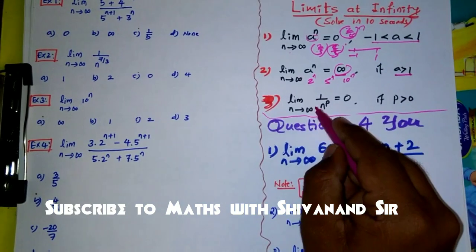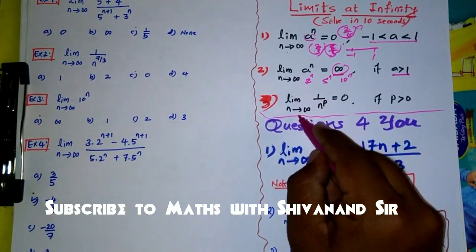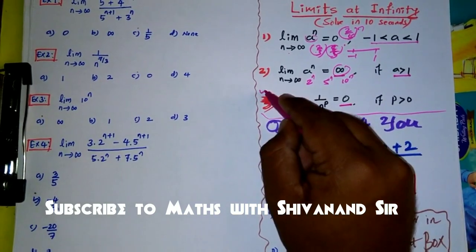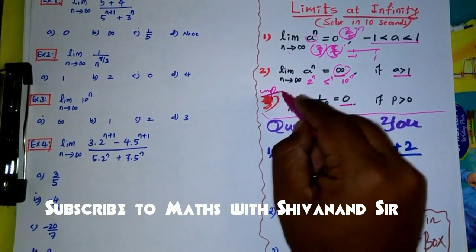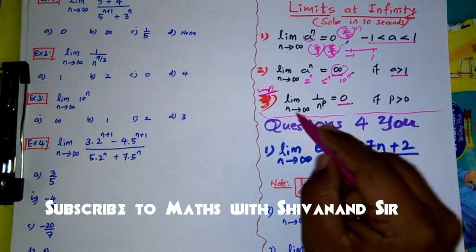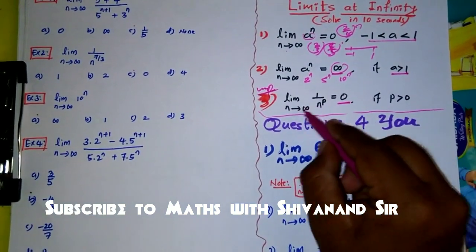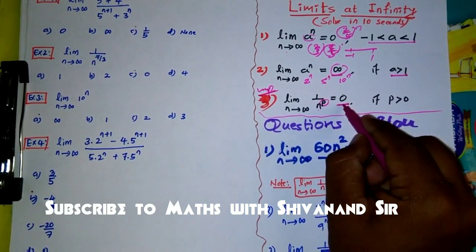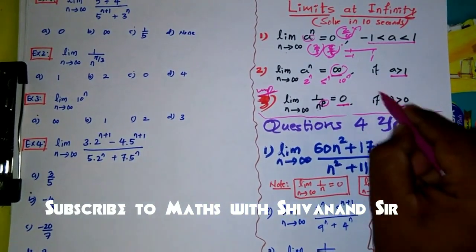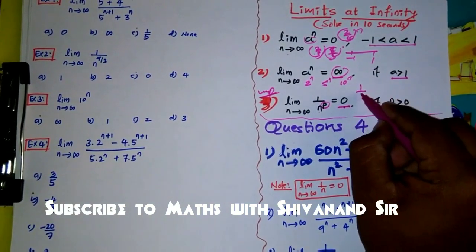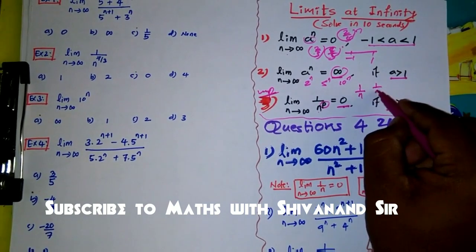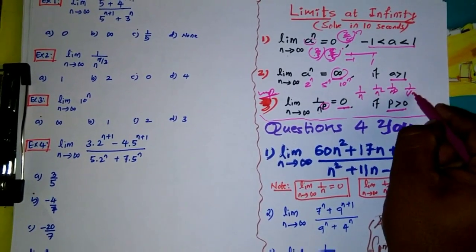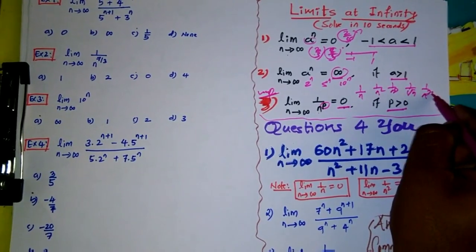Result number three: limit n tends to infinity of 1 divided by n^p equals zero, where p is greater than zero. This is a very important result. For example, limit n tends to infinity of 1/n is 0, 1/n² is 0, 1/n³ is 0, 1/√n is 0, and 1/n^(7/2) or 1/n^(5/2) — every such result is zero.